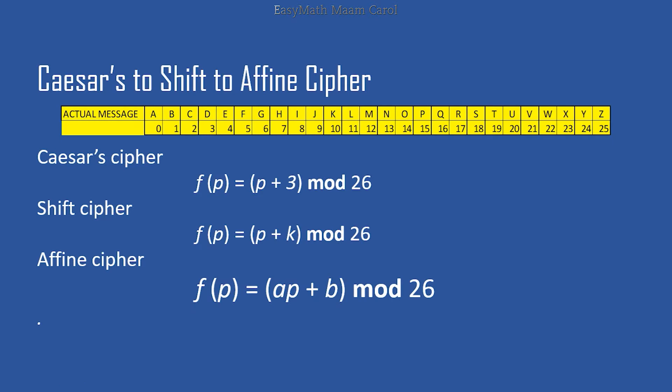From Caesar's to shift to affine cipher. In our previous lesson about cryptography, we explained that the simplest and oldest famous method of encryption was used by Julius Caesar when he was conquering to expand his empire. And if you are going to make a function out of that cipher, this is the result: f(p) = (p + 3) mod 26. Modulo 26 because there are 26 letters in the alphabet, and plus 3 because he shifted the letters by three positions to the right to replace the original message.